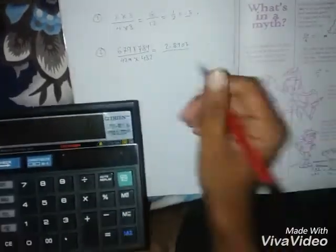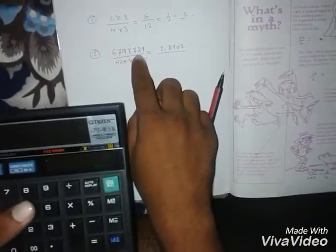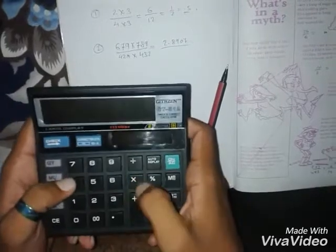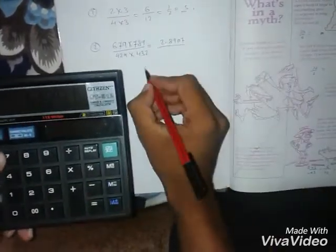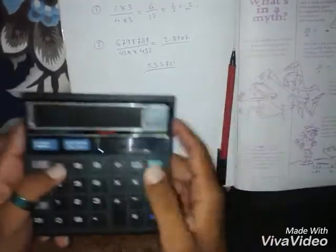Let me show you the proof of this. 679 into 789 equals, you can see, 535731, divided by the next...